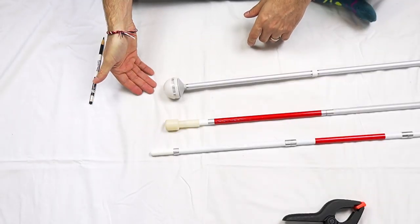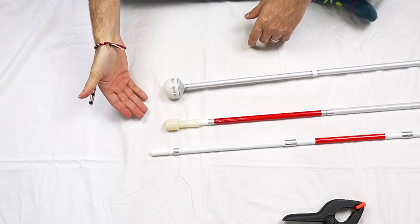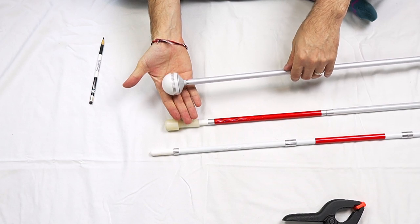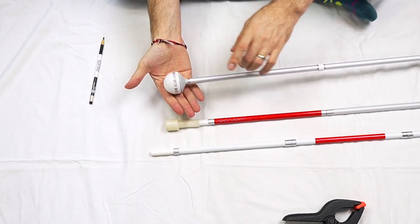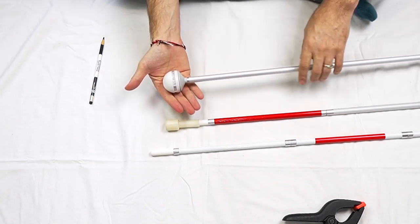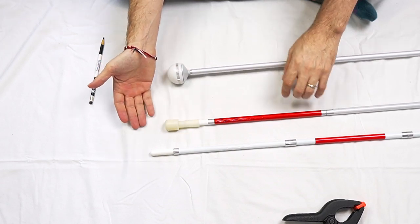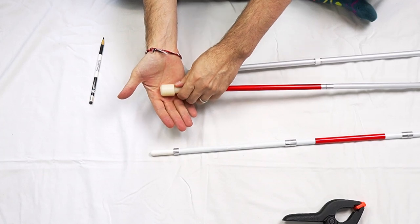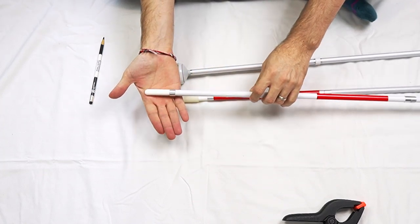Here I have three styles of tips. These are all hook style tips. I have the light up LED rolling tip. If you'd like to learn more about this tip, check out the video in the upper right corner. Next, I have just a small marshmallow style tip. And then third, I have a pencil tip.